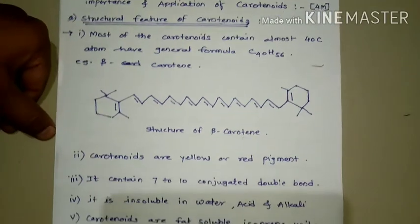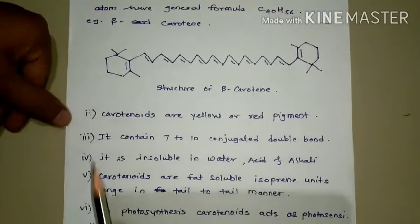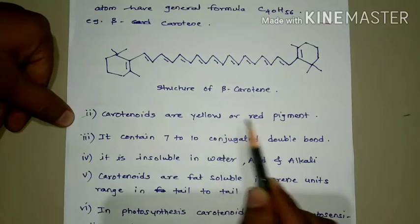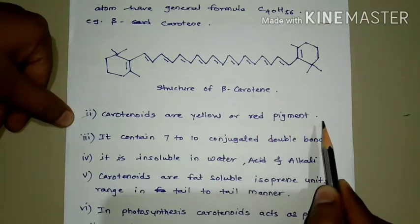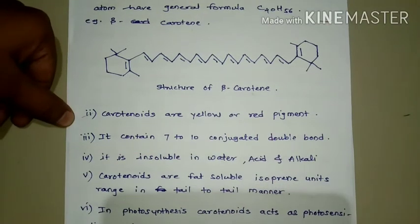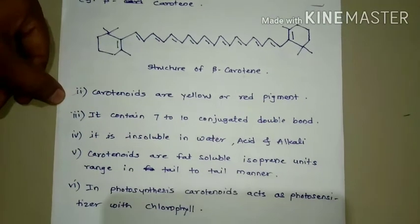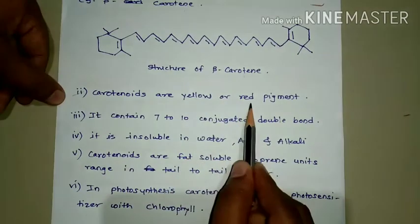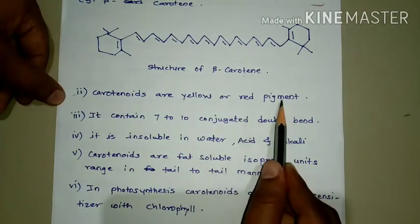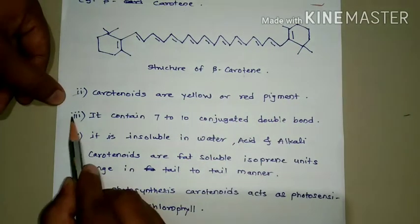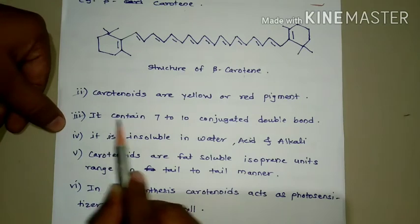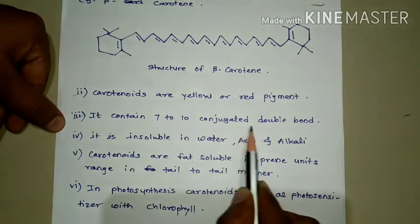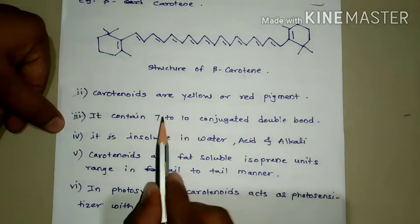The next point is: carotenoids are yellow or red pigments. Then third, it contains seven to ten conjugated double bonds. The number of conjugated double bonds is nearly seven to ten in the carotenoid structure.